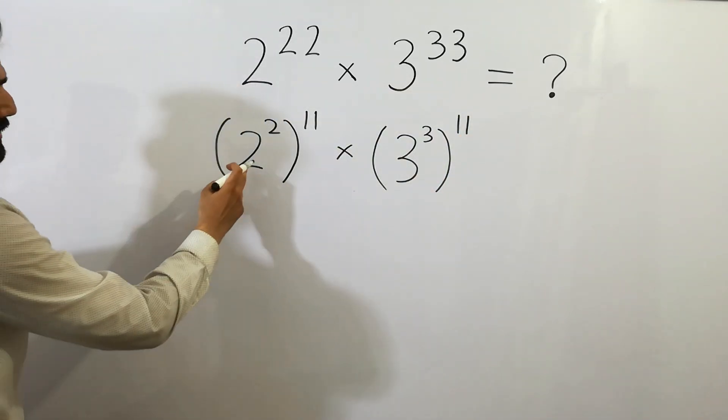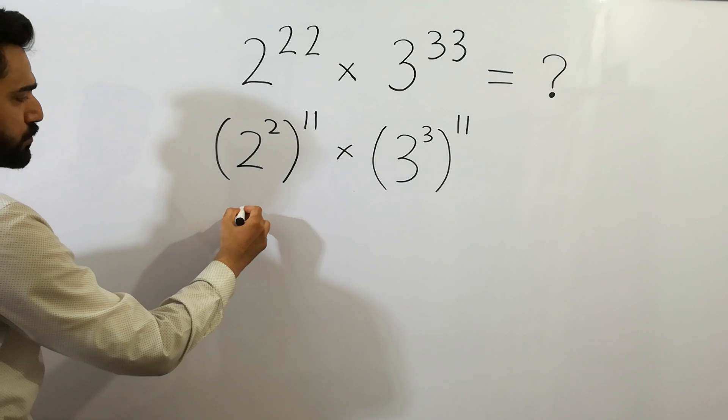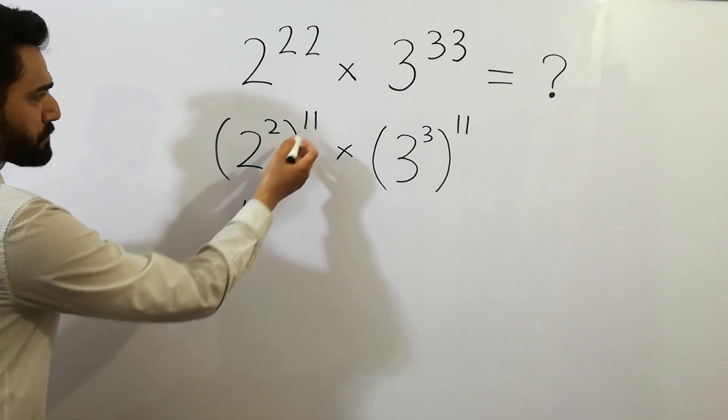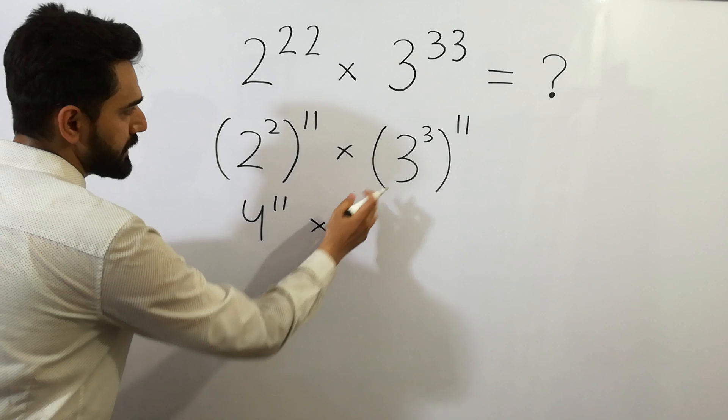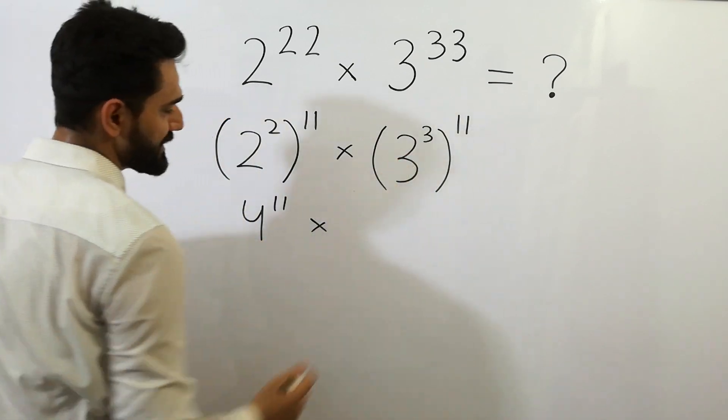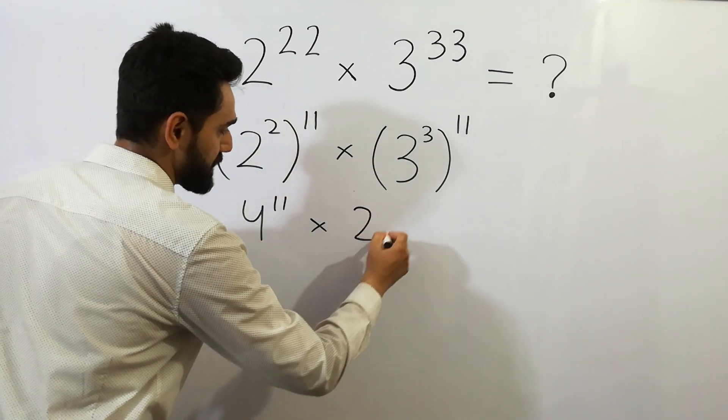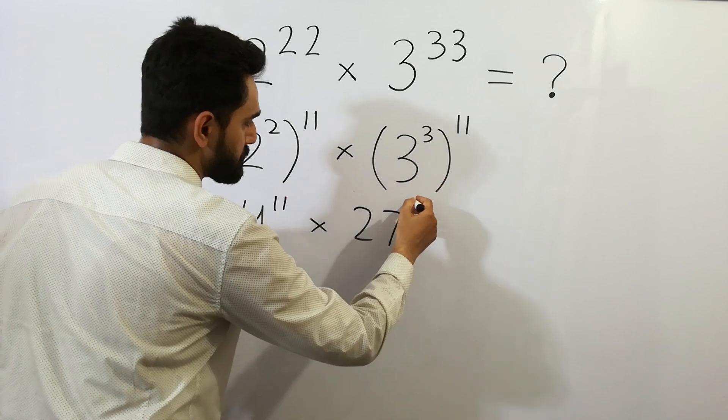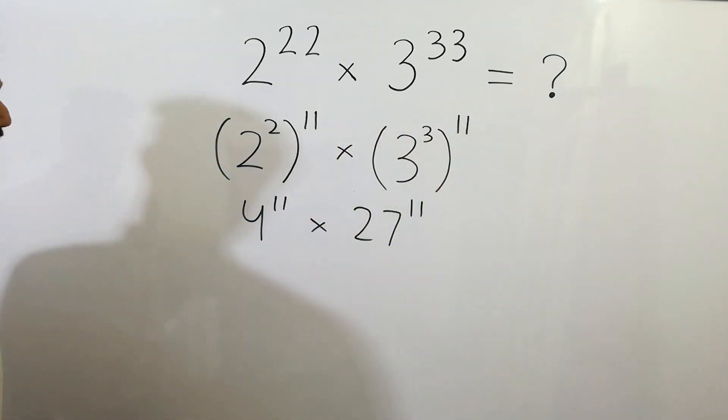If we solve it, 2 to the power 2 is equal to 4 to the power 11, and 3 to the power 3 is equal to 27 to the power 11.